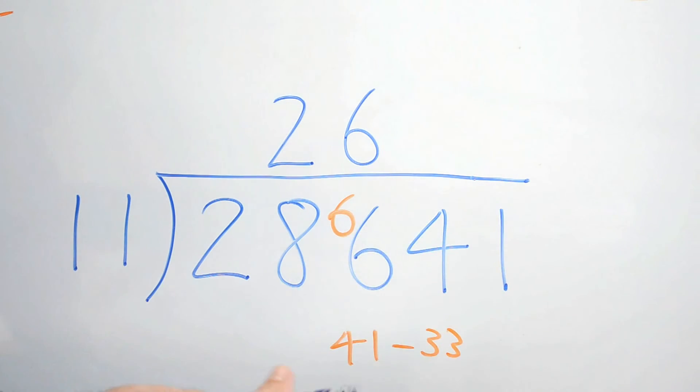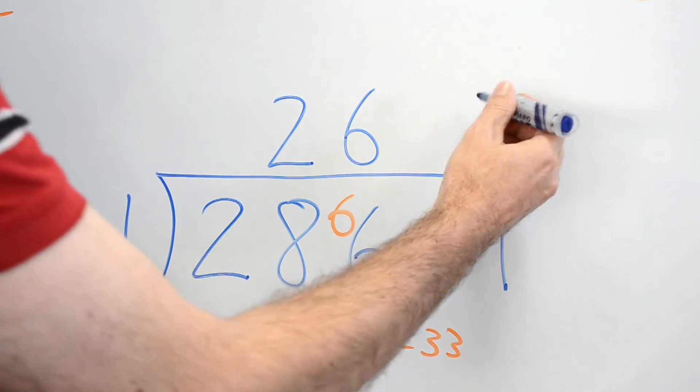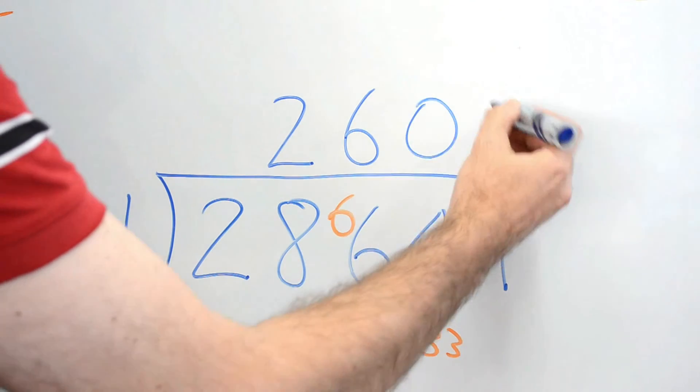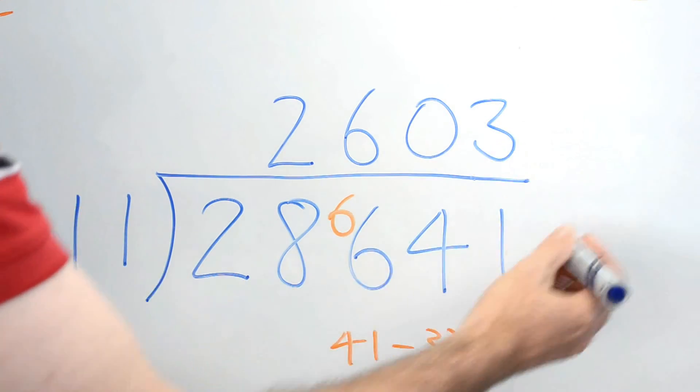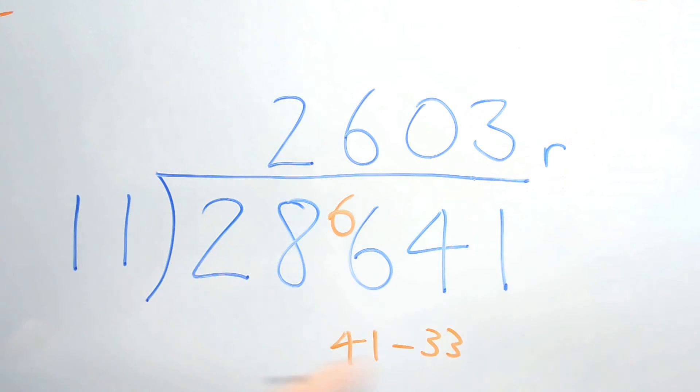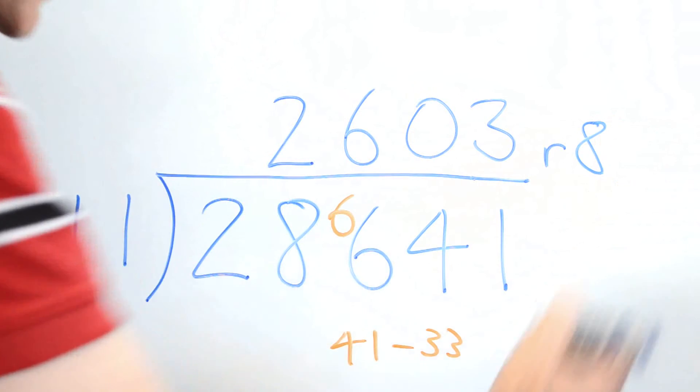Now, when we're putting our 3 up the top, though, we have to put it... Not here, though, do we? We put it here. So we put a 0 in between. Yep. And then we put a 3 at the end. And we are going to have a remainder. And that remainder is of 8. Good girl. That's right.